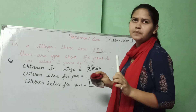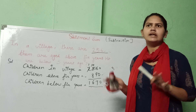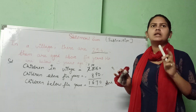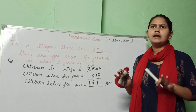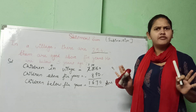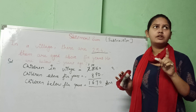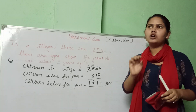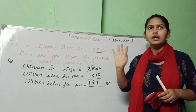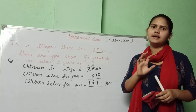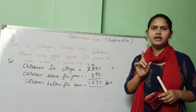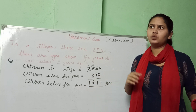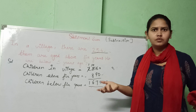Now let's discuss one more problem. Suppose in a cinema hall there are 1,000 seats. But on one day, 825 people watched the film. So how many seats were empty on that day? We have 1,000 seats, 825 were filled — we have to find how many are left.